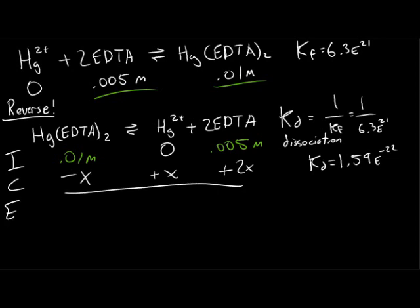Therefore, at equilibrium, we will have 0.01 molarity minus x, x and 0.005 molarity plus 2x. However, our Kd is very, very small, so we can use the small x approximation. Therefore, we can strike off any minus x's or plus x's of any kind. This will make our math for the Kd a bit simpler.